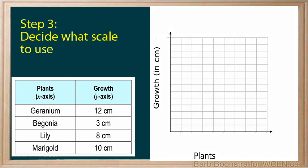To decide on a scale, we will examine the numbers to graph. We want to use most of the graphing area, but we also want the numbers to be easily graphed. Always start a scale at zero. Our scale here goes to 12, so if we used one line equals one centimeter, the numbers would fit. Notice that the numbers are printed on the lines.